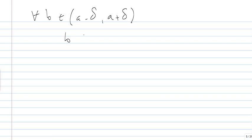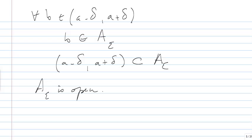we found that B belongs to A_epsilon, because we found that delta bar. Which implies that (A - delta, A + delta) is in A_epsilon, and this shows of course that A_epsilon is open. And this will finish the proof of the claim that the set C is G delta.